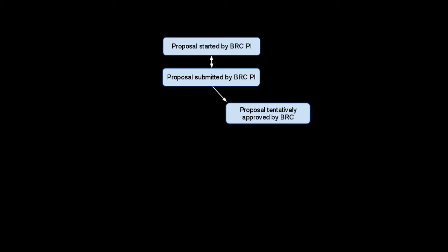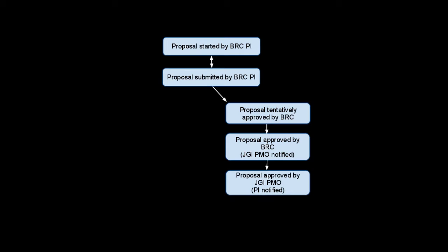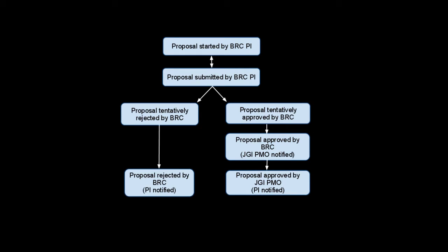After reviewing the proposal, the reviewer can mark the proposal as approved. After the proposal is approved, the approval can be finalized and the JGI Project Management Office will be notified. At this point, the JGI PMO can approve the proposal and the PI will be notified of the approval. If the BRC decides to not go forward with the proposal, it can be marked as rejected. The rejection can then be finalized and the PI will be notified.